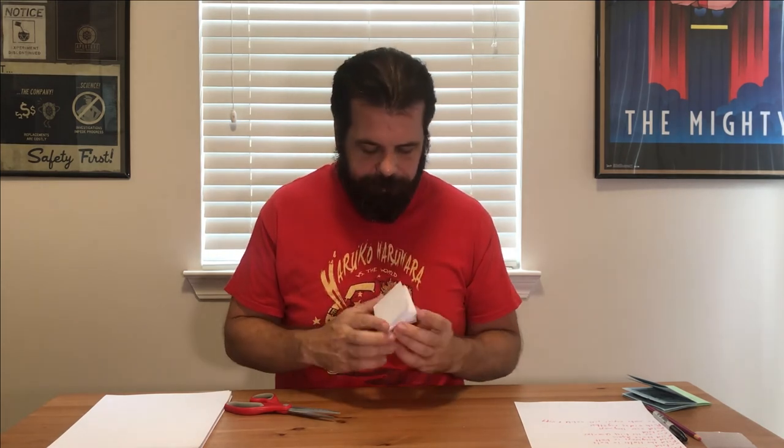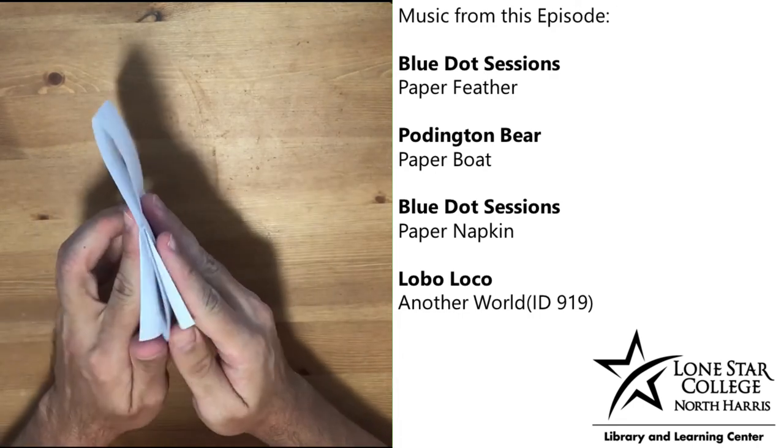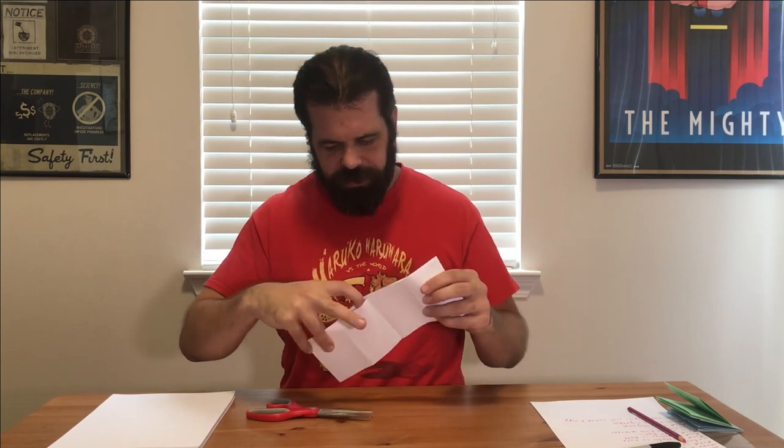One important thing to consider when you're making a lot of zines is how easy is it to bind. If you're just doing five or ten, doing a little hand stitch like this won't take too much time. But if you're doing 20, 30, 50, then it's going to be difficult to find the time to make those. So doing these little folds like this is a great way to make zines in a hurry. Fold it, fold it over, and if you push these two sides together, sometimes this works, sometimes it doesn't.